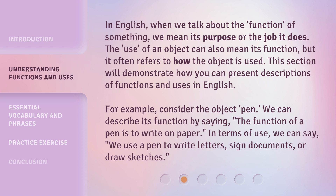This section will demonstrate how you can present descriptions of functions and uses in English. For example, consider the object: pen. We can describe its function by saying, the function of a pen is to write on paper. In terms of use, we can say, we use a pen to write letters, sign documents, or draw sketches.